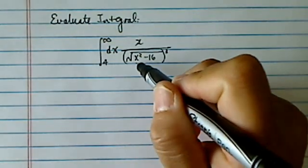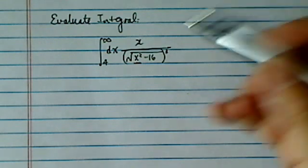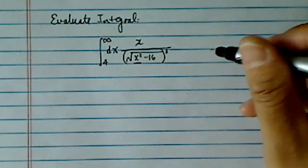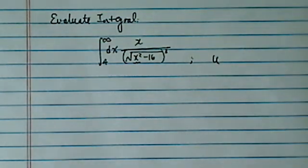Now notice on the bottom we have x squared and on the top we have x. So otherwise, if it's not as nice as this one, we do have to use trig substitution. But in this case we can actually avoid it.